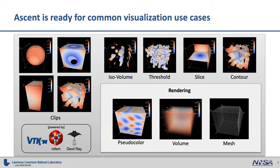Ascent is ready for common cases—the 80% of what people do day to day. This includes clipping, contours, iso volumes, slicing, pseudo color plots, volume rendering, and drawing meshes. These are the basics people go to immediately for in-situ visualization. We also have connections to Alpine algorithms being developed that will be deployed with Ascent. For performance portability, we leverage VTKM, which provides algorithms and the ability to run on CUDA or HIP. We also use a built-in ray tracer called Devi Ray, which is a higher-order ray tracer that also runs in a performance portable way.